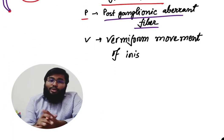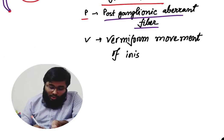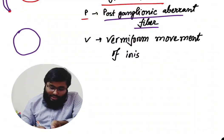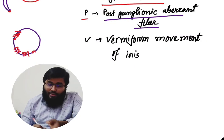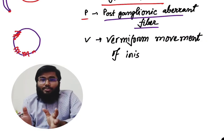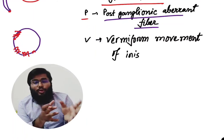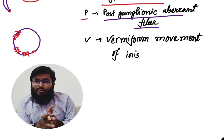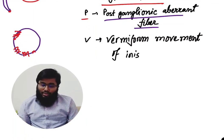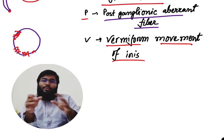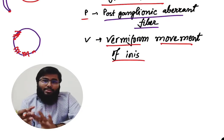V in the mnemonic stands for vermiform movement of the iris. Some areas of the iris are paralyzed and some are not, which causes abnormal or irregular movement of the iris — this is known as vermiform movement of the iris.